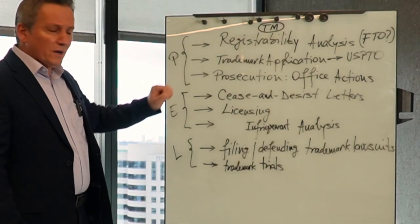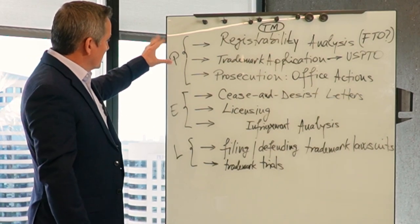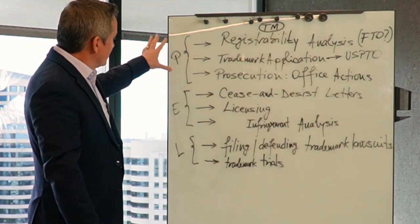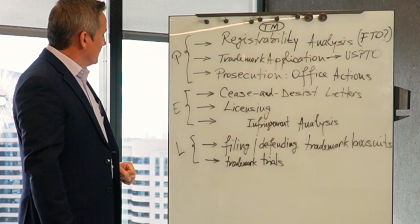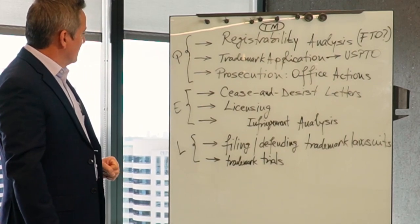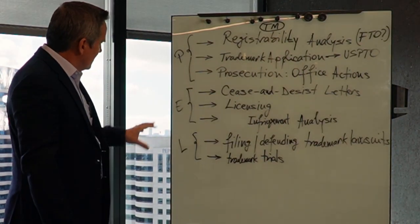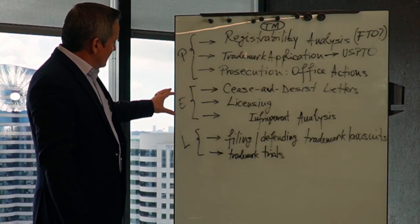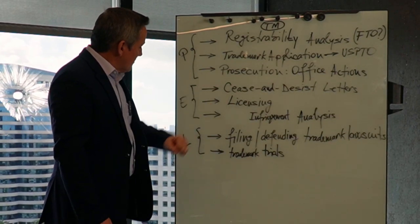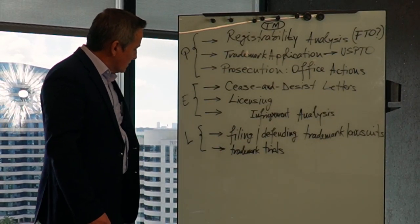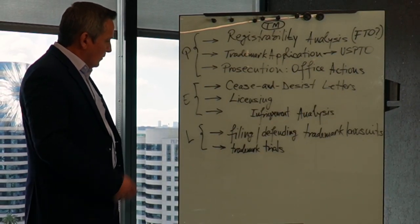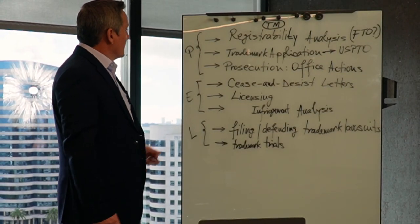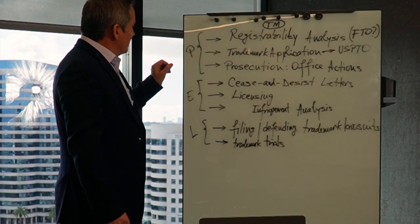The first section is called the prosecution section — prosecution-type work. The second section is enforcement — enforcement-type work. And the third is litigation, when things have to be litigated in court.